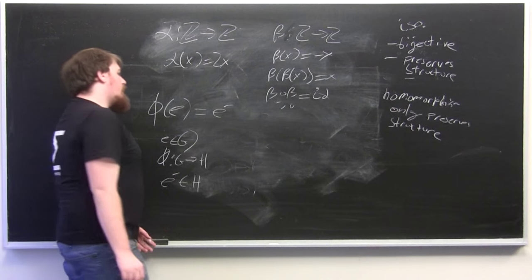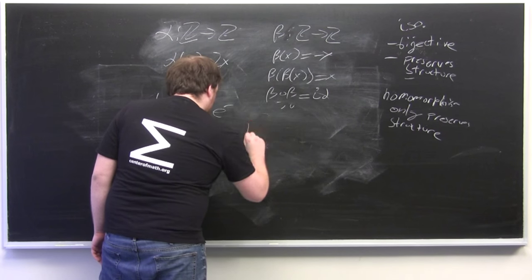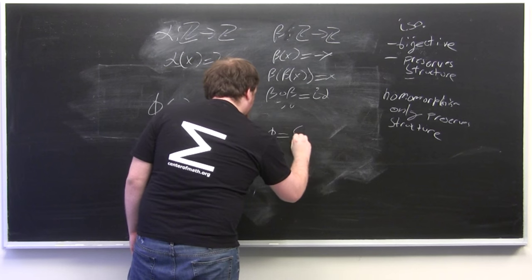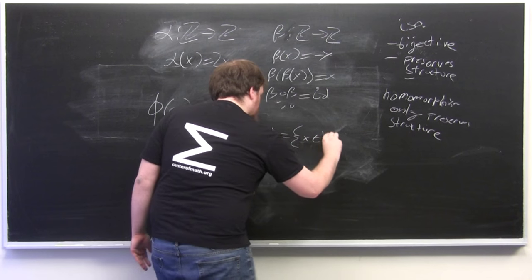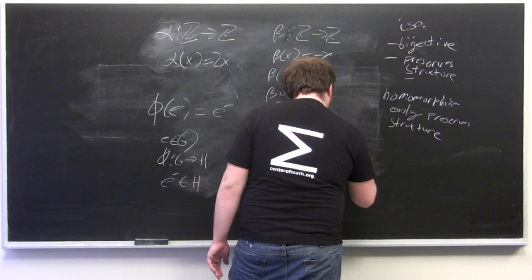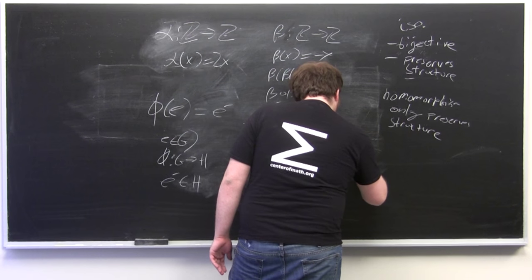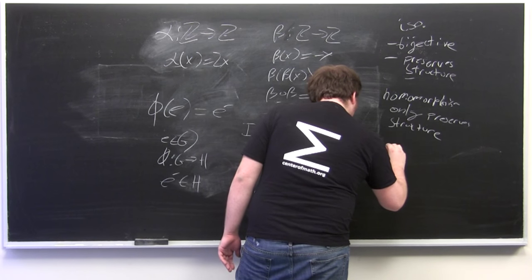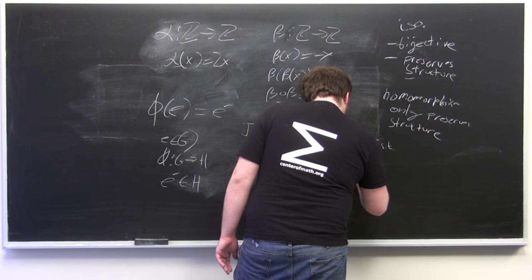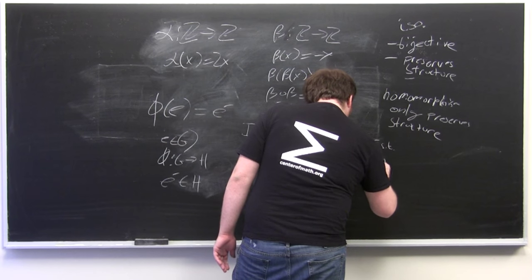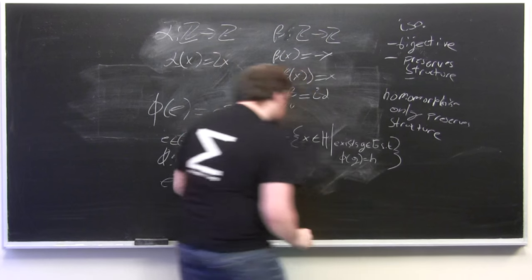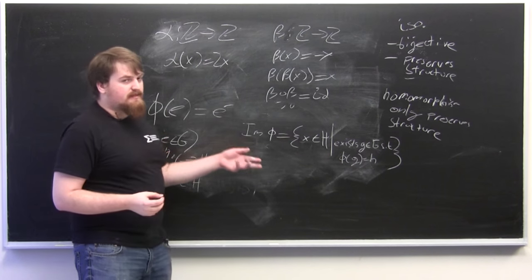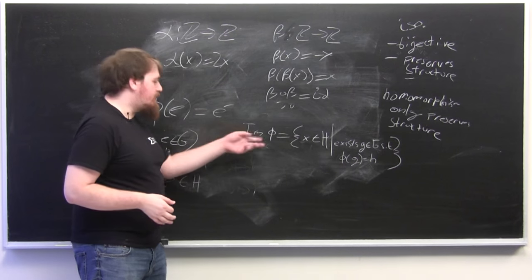Another notable thing is that the set of points in H, we'll call it the image of phi, which is equal to the set of points in H which are sent to or are the image of some element of G, the set of elements in H, that is going to be a subgroup of H called the image of phi.